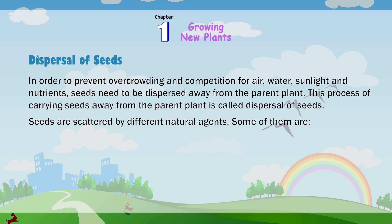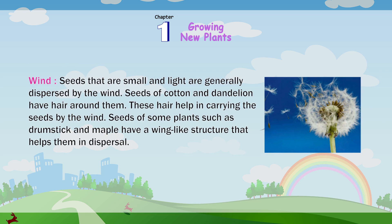Seeds are scattered by different natural agents. Wind: Seeds that are small and light are generally dispersed by the wind. Seeds of cotton and dandelion have hair around them. These hair help in carrying the seeds by the wind. Seeds of some plants such as drumstick and maple have a wing-like structure that helps them in dispersal.